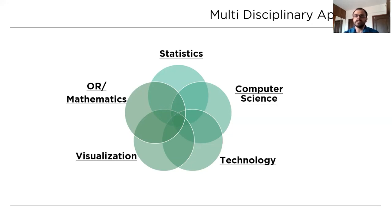So these are the five elements: statistics, computer science, technology, visualization, operations research, and mathematics. These are the five crucial elements which make up data science.